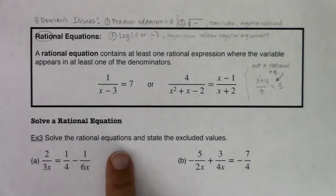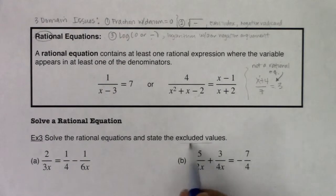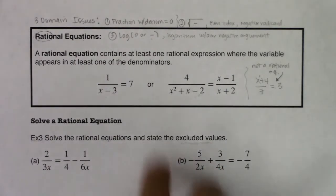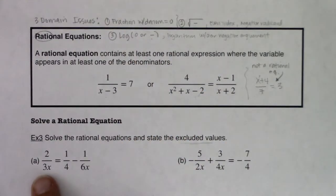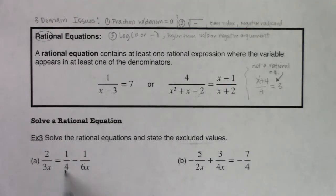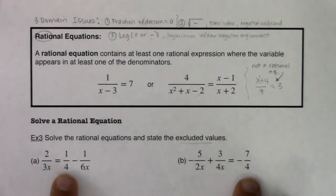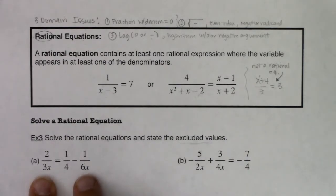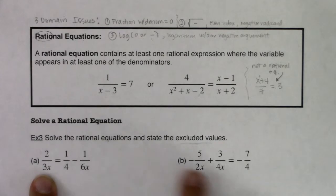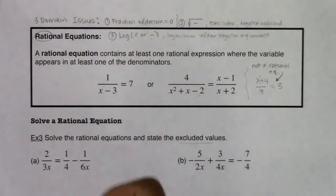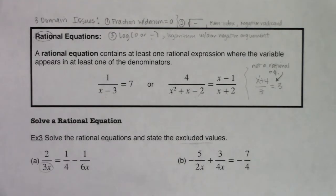Example 3 says: solve the rational equations and state the excluded values. Excluded values are those numbers I can't plug into my function because they would give me a domain violation. Let's look at our denominators first. In part a, I have 3x, 4, and 6x. In part b, I have 2x, 4x, and 4. The constant denominators like 4 will never zero out — I don't have to worry about those. But 3x, 6x, 2x, and 4x can all equal zero, and they all equal zero at the same spot.